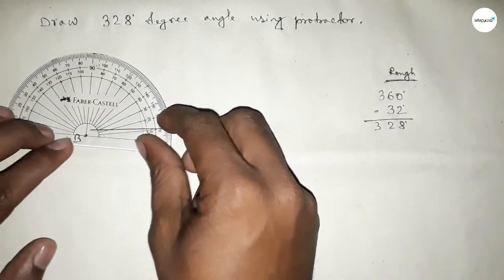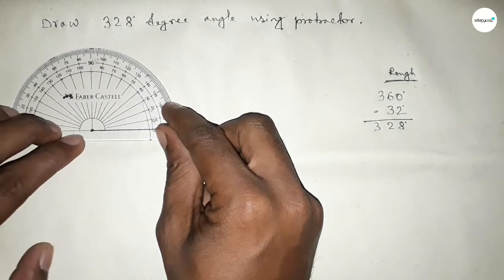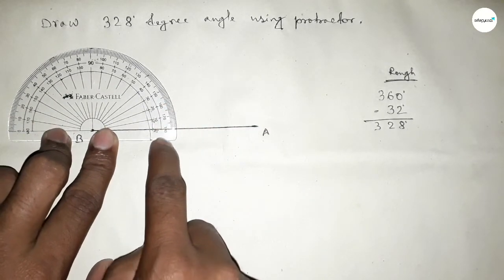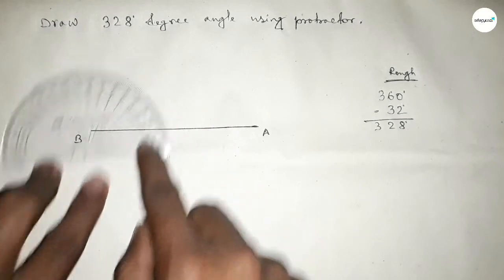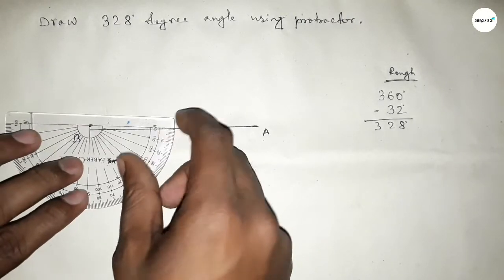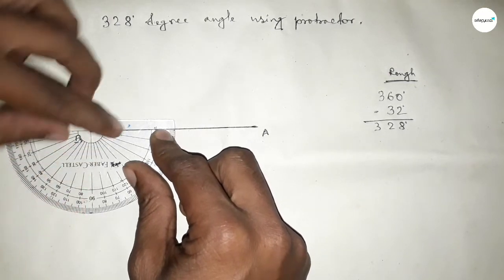First we have to draw 360 degree angle. So putting the protractor on point B by this way and counting the angle - this is a total 180 degree angle. Plus putting the protractor on point B by this way.